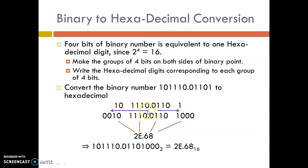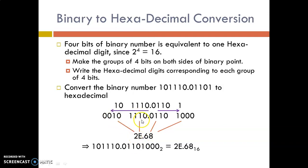This is the decimal point. For the integer part we move left, for the fractional part we move right, making groups of 4 bits. If a group has fewer bits, we add 0s on the sides. This group has only 2 digits so we put 2 zeros; another group has only 1 digit so we put 3 zeros. The hexadecimal equivalent of 0010 is 2, 1000 is 8, 0110 is 6, and 1000 is 8. That is how you convert a binary number to hexadecimal.